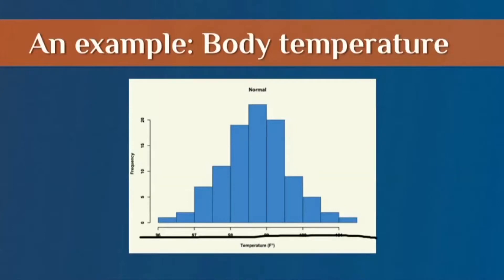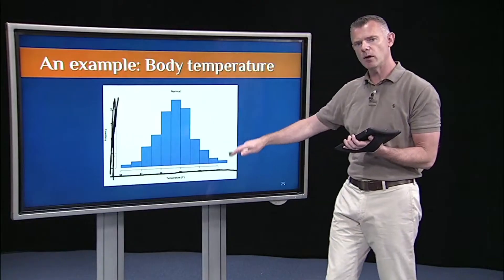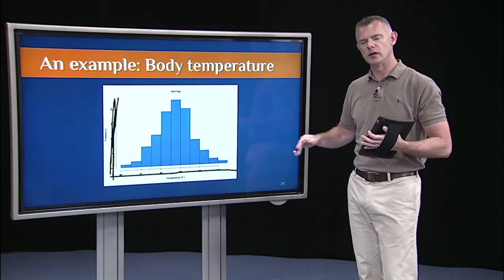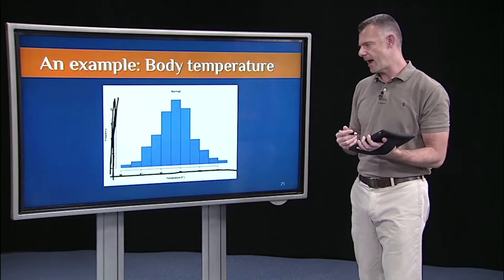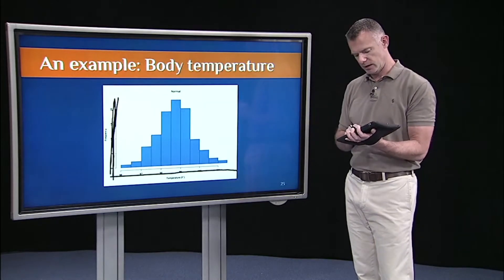In this case, the example is body temperature measured in degrees Fahrenheit. And on the y-axis, all I have is frequency. It's just the number of people in this distribution, in this sample, that have this particular body temperature.